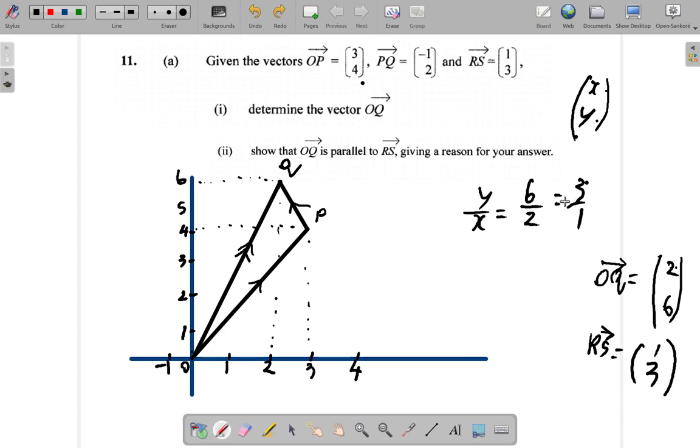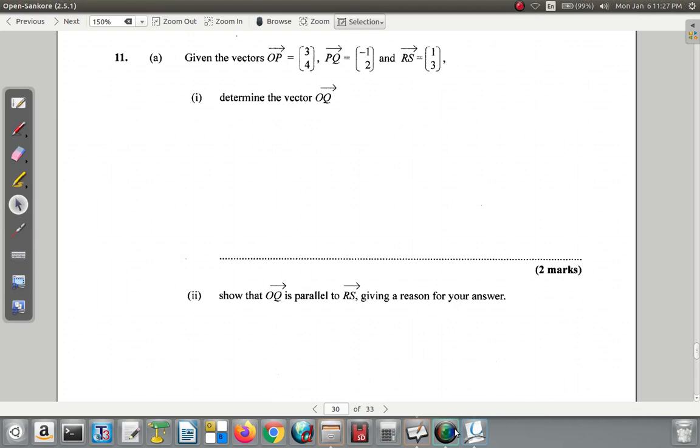The rise over run for each would be the same. Let's see: 6 divided by 2 is 3. 3 over 1 is equal to 3 over 1. So you just make a note - you can write it in English after you do the calculation - that they have the same gradient, therefore they must be parallel. So that's it for 11a. We'll continue with 11b later on.